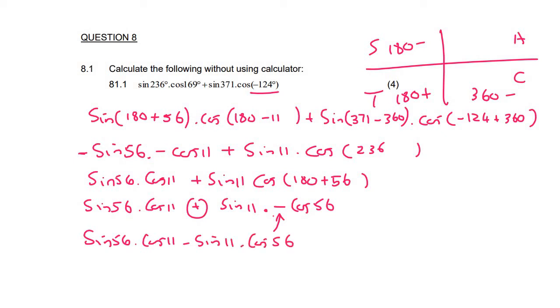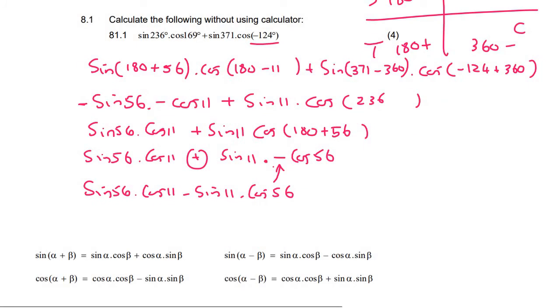Now I'm going to get the formula sheet. And so it looks like we have a sin cos and a sin cos. But now on the formula sheet, it's a sin cos and a cos sin. But when you multiply, the order doesn't matter. So we can easily switch these two around. So it would be sin 56 cos 11 minus cos 56 sin 11. Now, it's this one over here. So we can rewrite it as sin of 56 minus 11.